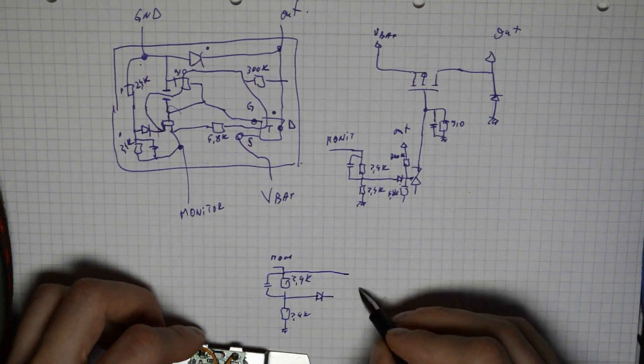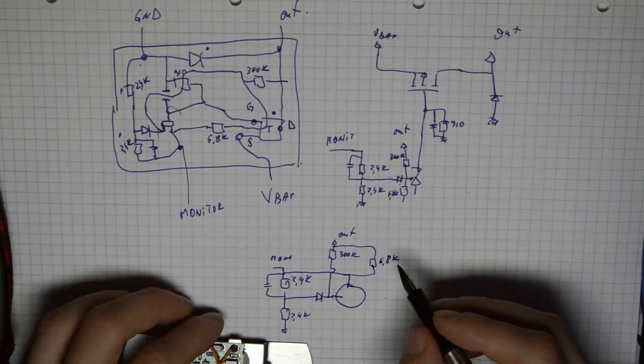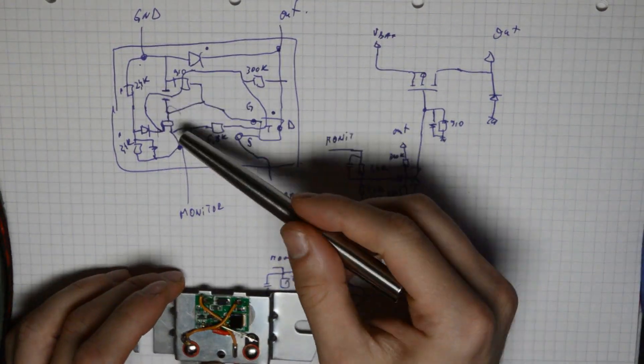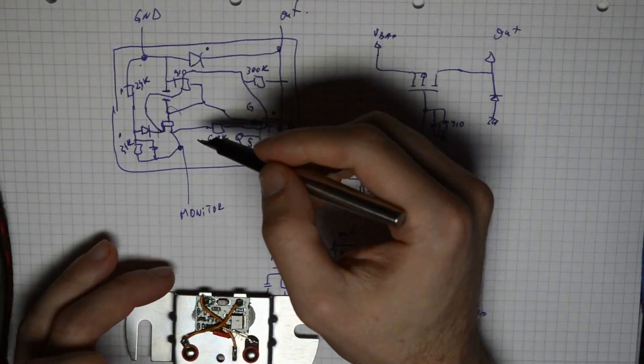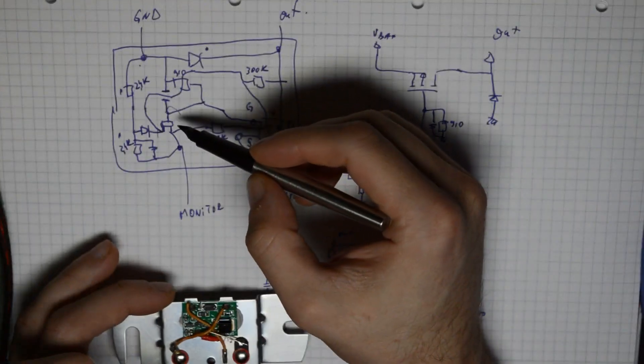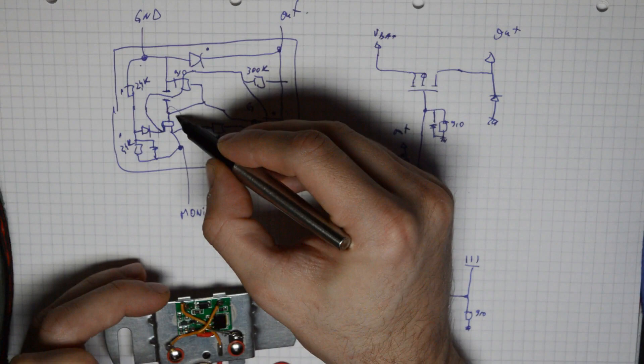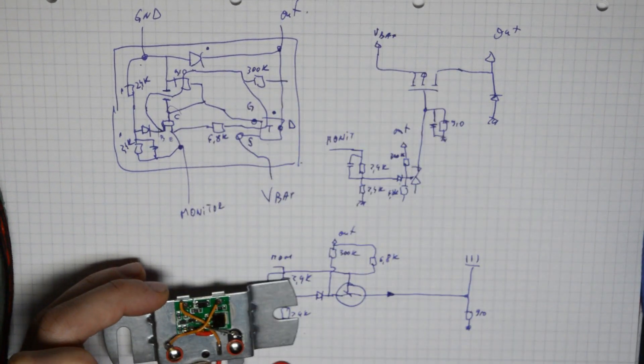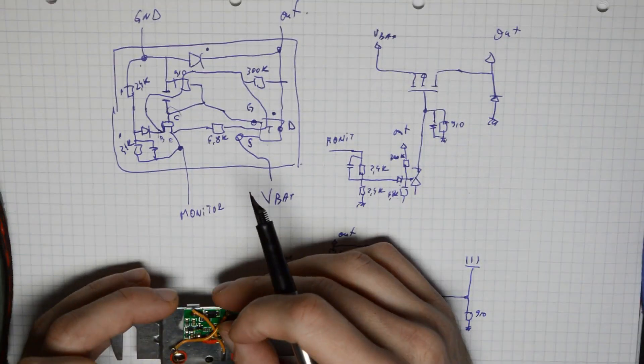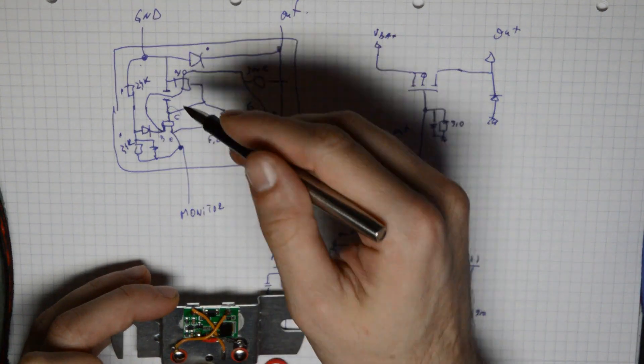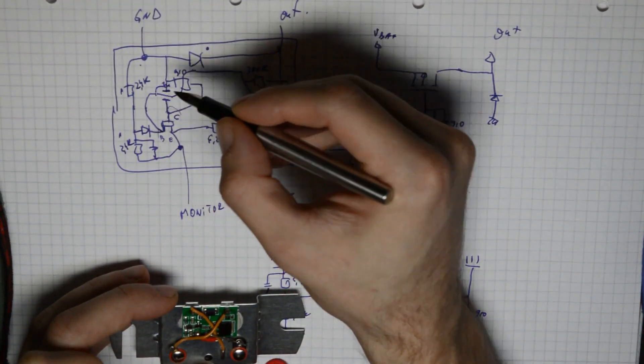Let's see exactly how this piece is built. If we consider this to be a transistor, then based on the type of capsule it is, it should have its collector, its base, and its emitter. Now if we look a bit more closely, this capacitor is not connected here but rather here.